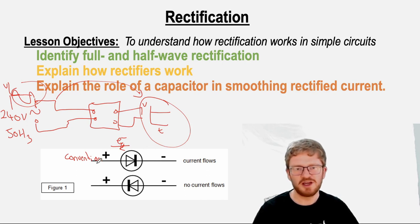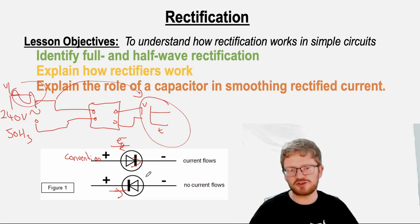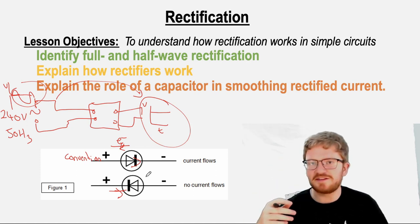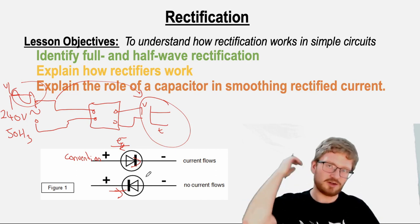So for a diode around this way, if I have a positive here, negative here, the conventional current is flowing through the diode like that, which is in the direction of the arrow, so that current is allowed to flow. If I have one around the other way, current is trying to flow that way, but it can't because it's met by this block, and so the current is blocked. In terms of the actual construction of a diode and what it's made of, none of that is necessary for the CIE A-level, so you can just ignore anything that mentions about how they work.